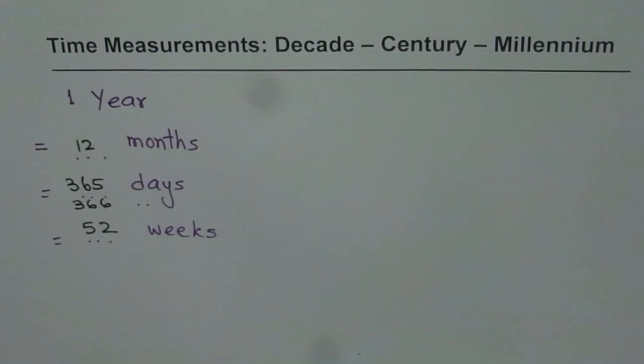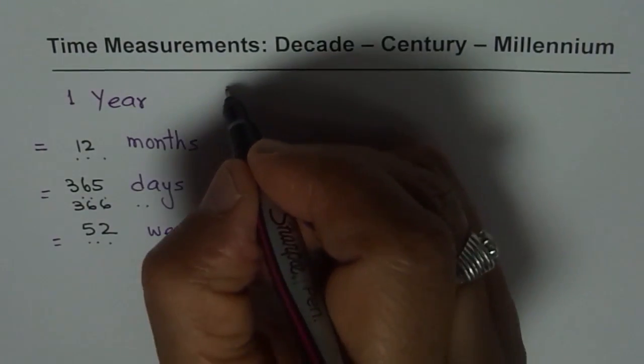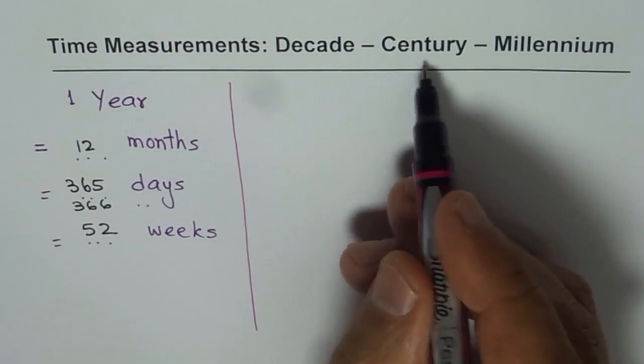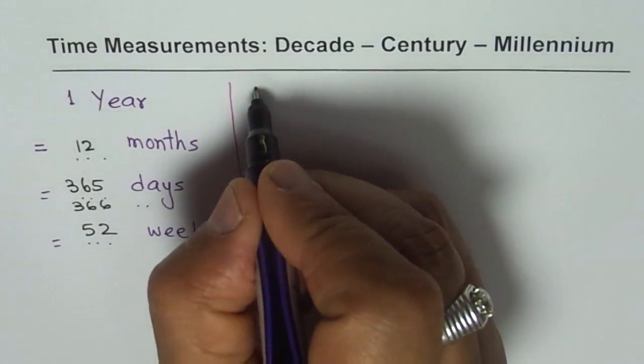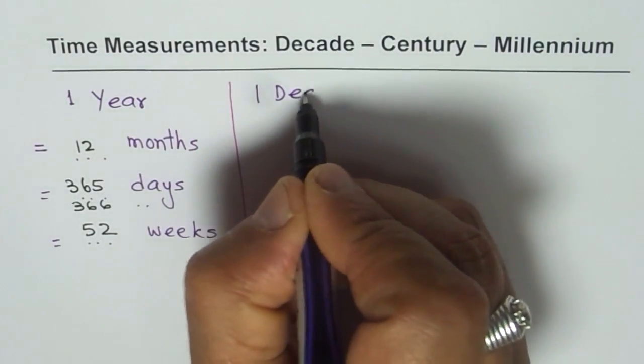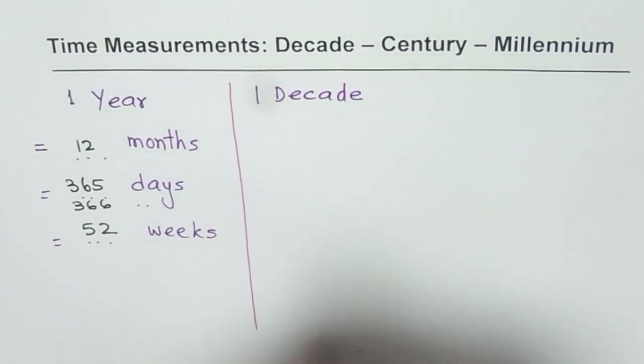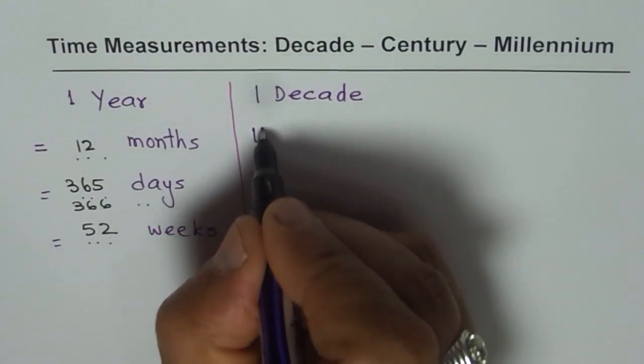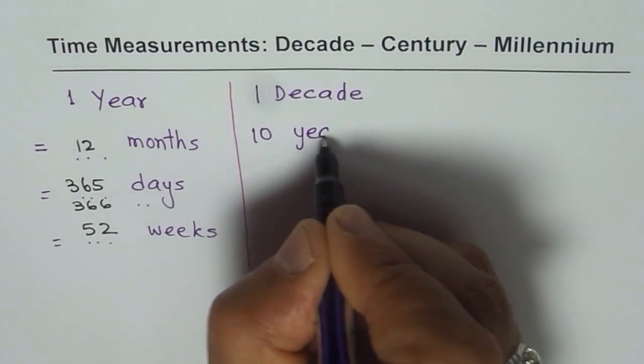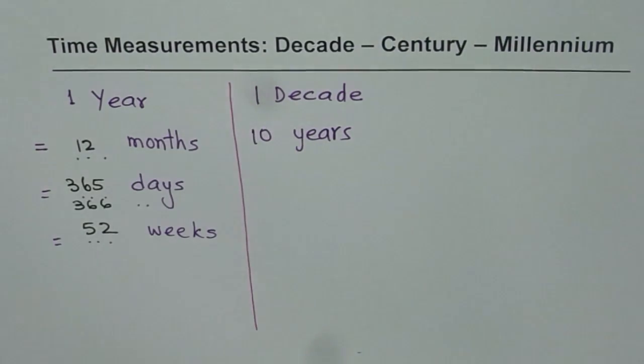Now let's come to our main question and that is how about decade, century and millennium? Now what is one decade? Now whenever we say one decade, it means always 10 years. It means 10 years. So one decade is 10 years.